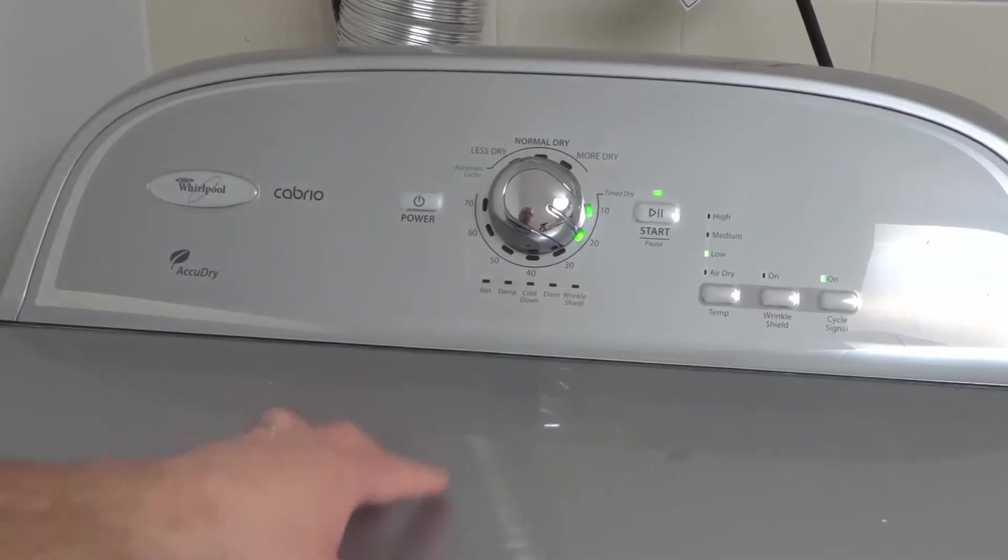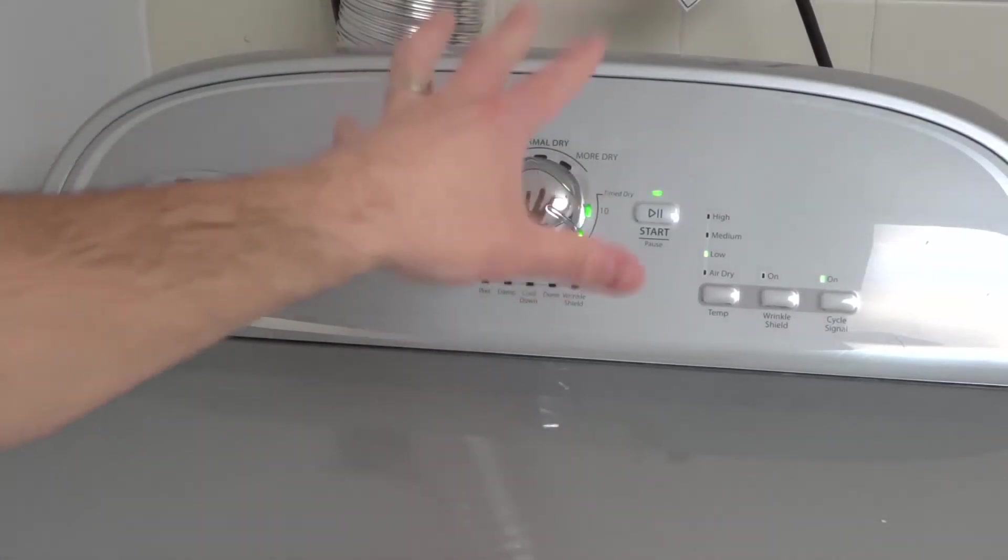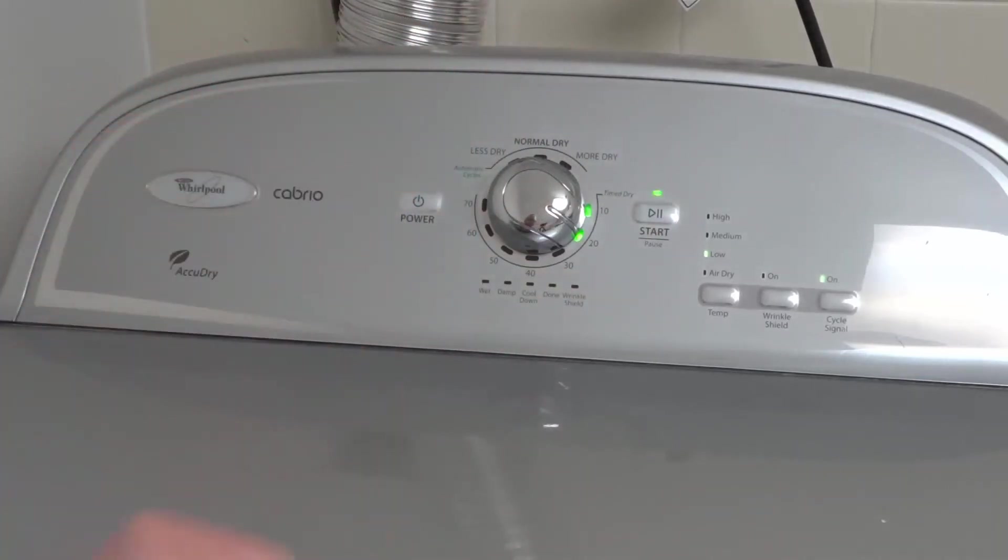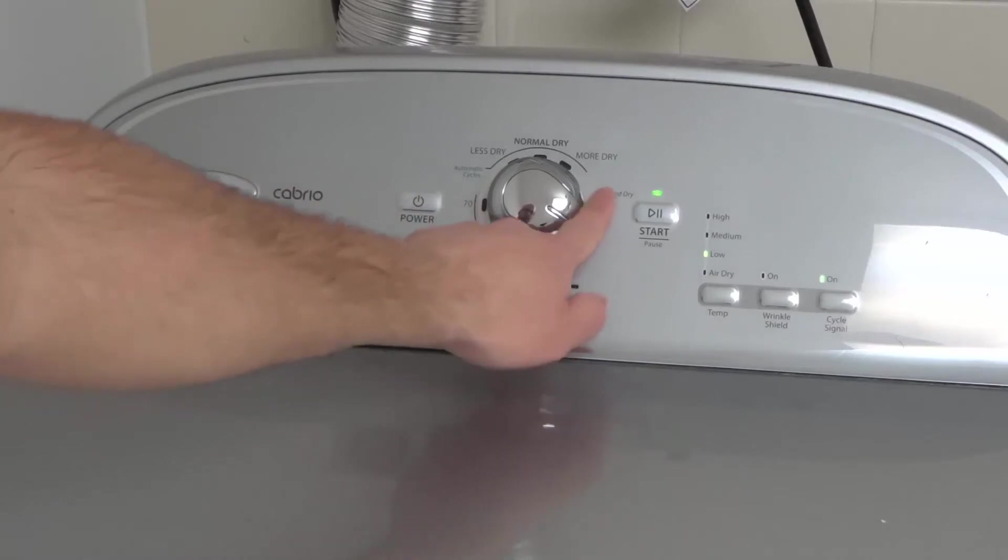You hear the chime there, and now you can use this dial to control the type of drying cycle that you're going to do. So the timed dry options are all down here. You can see right here. So I can do, these are in a number of minutes.